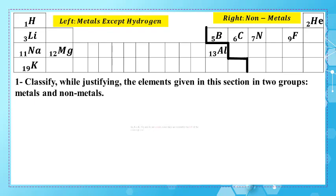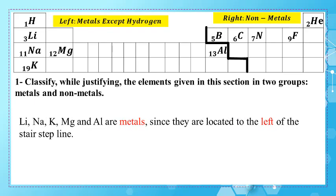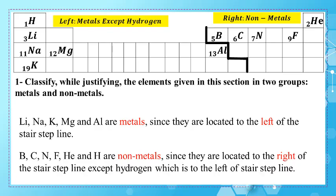So we can say that lithium, sodium, potassium, magnesium, and aluminum are metals, since they are located to the left of the stair-step line. While the elements boron, carbon, nitrogen, fluorine, helium, and hydrogen are non-metals, since they are located to the right of the stair-step line — except hydrogen, which is to the left of the stair-step line.